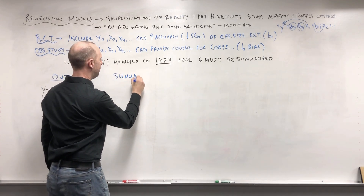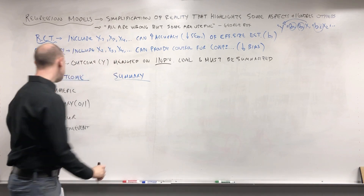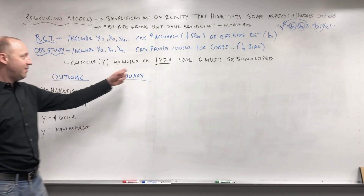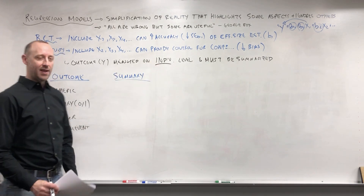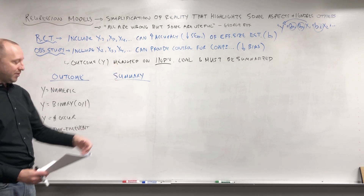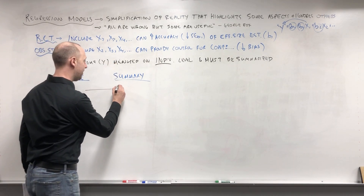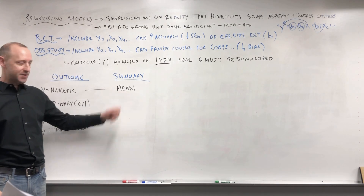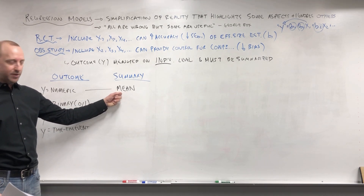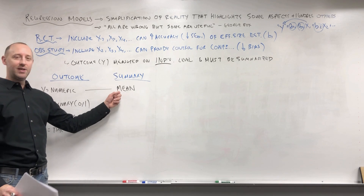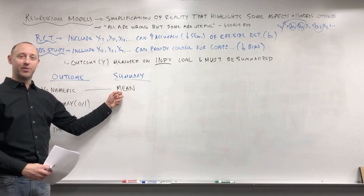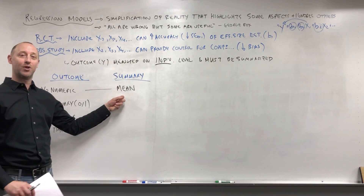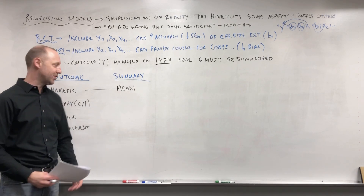All these need to be summarized in some way. Suppose the outcome is systolic blood pressure measured for each individual. The way we can summarize a numeric variable is by using a mean — there are other options, but a mean is commonly used, and summarizing with a mean allows us to work with linear regression. If we want to summarize a numeric variable using a median, that's where we'd work with something like quantile regression, which is one of those extensions we'll touch on in the course.